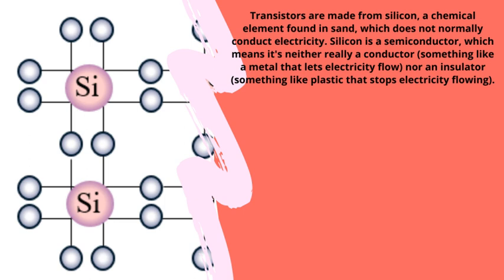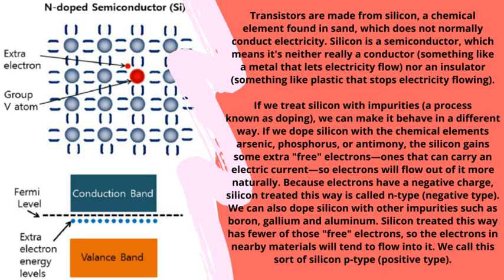Transistors are made from silicon, a chemical element found in sand, which does not normally conduct electricity. Silicon is a semiconductor, which means it is neither really a conductor — something like a metal that lets electricity flow — nor an insulator — something like plastic that stops electricity flowing. If we treat silicon with impurities, a process known as doping, we can make it behave differently. If we dope silicon with arsenic, phosphorus, or antimony, the silicon gains extra free electrons that can carry an electric current.